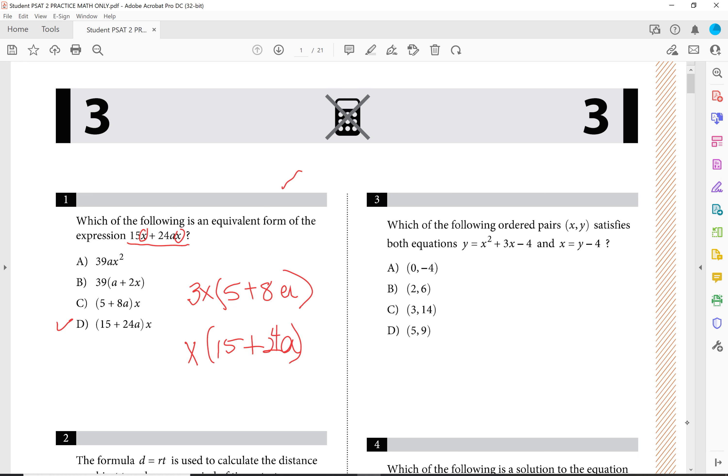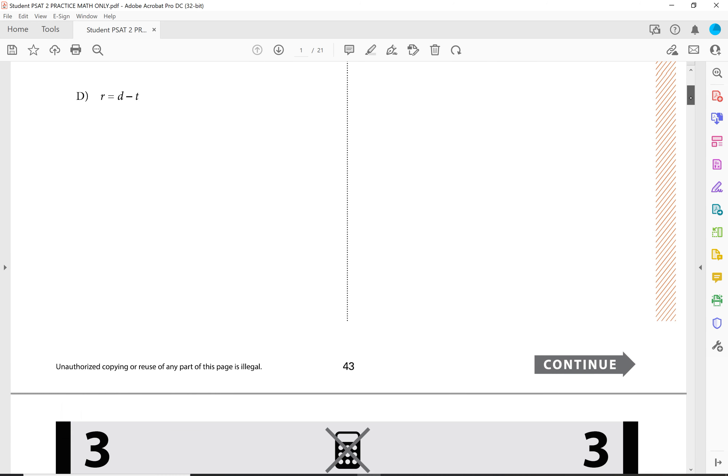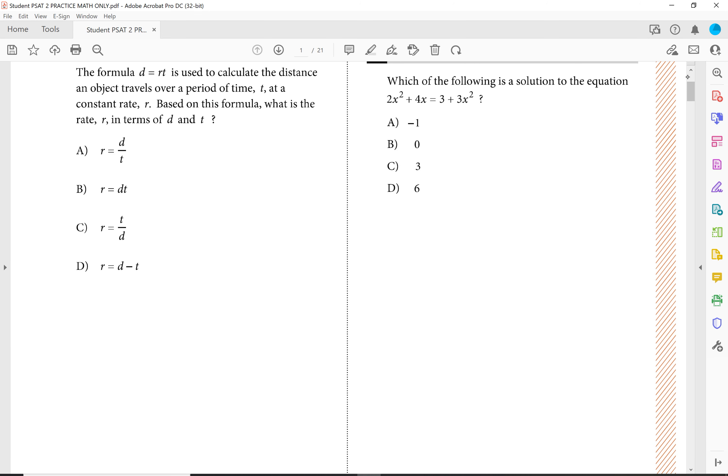The second question is even just as easy where you have a formula that they give you right here. They say that d is equal to r times t and it's used to calculate the distance an object travels over a period of time t at a constant rate r. Based on the formula, what is the rate r in terms of, pay attention to this little phrase